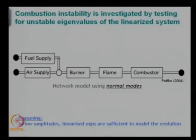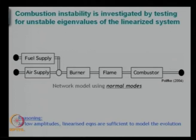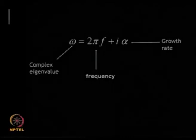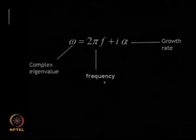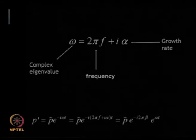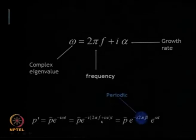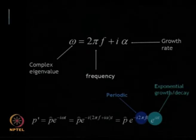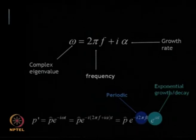The reasoning is that we are starting from low amplitude, so linearized equations are sufficient to model the evolution. If you are an engineer, we are taught to believe that below 10 percent amplitude everything is linear — some 11th commandment somebody said somewhere and we are believing it. And there is another crowd who believe 5 percent is the threshold. Between these two categories it includes all the engineers. We have this equation: omega equals 2 pi f plus i alpha, where f is the frequency and alpha is the growth rate. If you write p-prime as p-hat times e to the power i omega t, you will have a periodic part and exponential growth or decay.